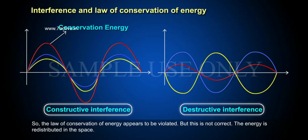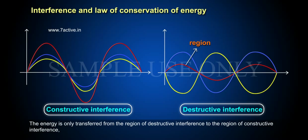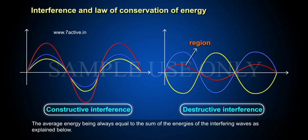But this is not correct. The energy is redistributed in space. The energy is only transferred from the region of destructive interference to the region of constructive interference. The average energy is always equal to the sum of the energies of the interfering waves, as explained below.